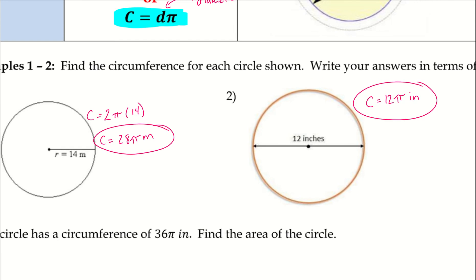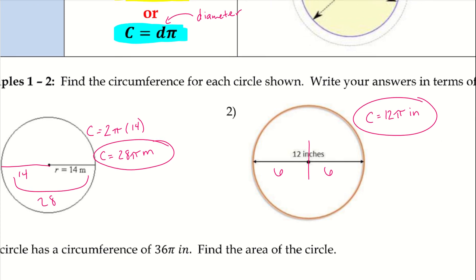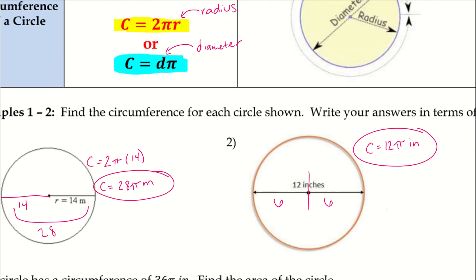For problems like these, there are many ways you can think about doing it depending on which equation you're more comfortable with. If you like Dπ and you have radius 14, you can figure out the diameter is 28 and do 28π. Or if you're given diameter 12 and prefer 2πr, you cut it in half to get radius 6, then do 6 times 2 to get 12π. Whichever way you're most comfortable, you'll get the same result.